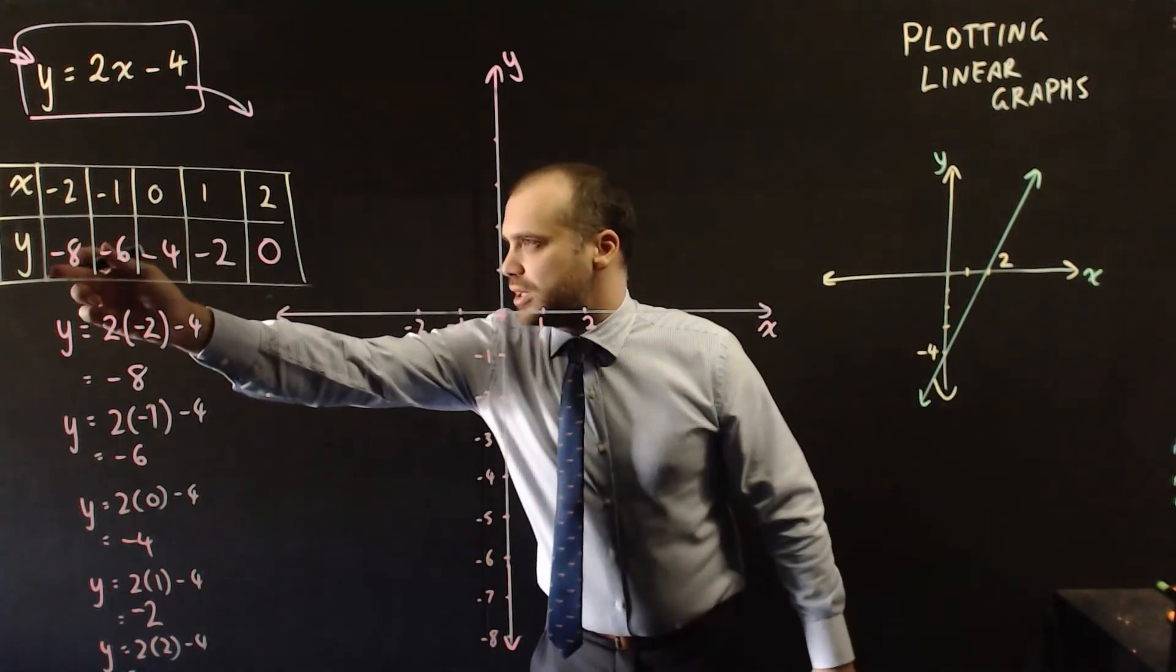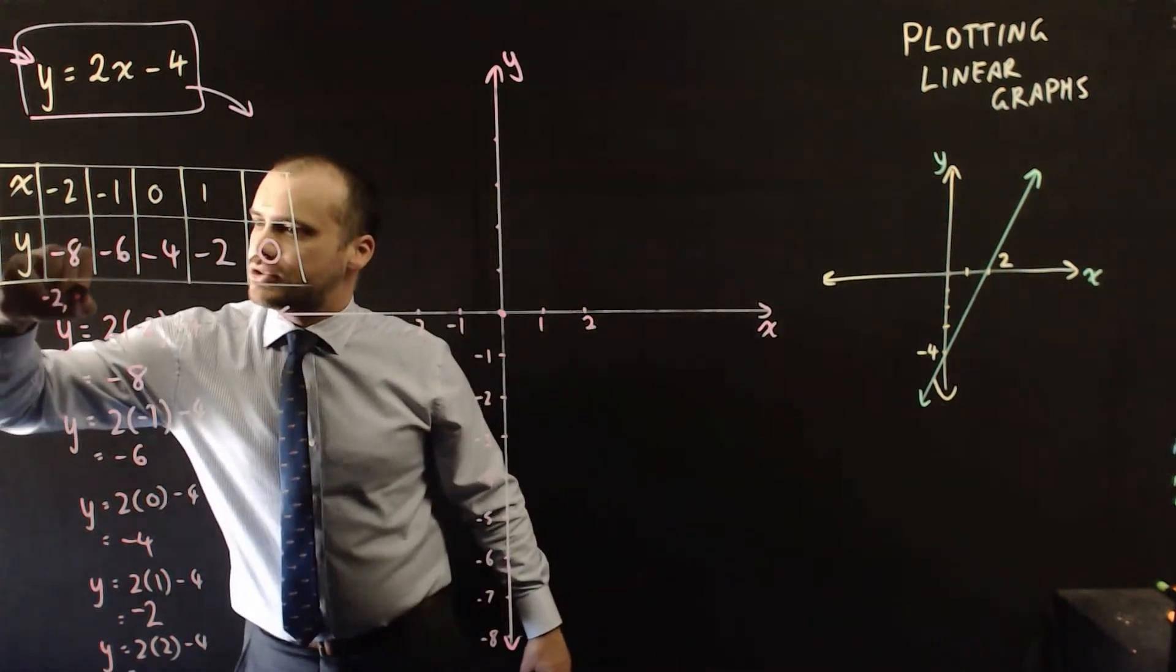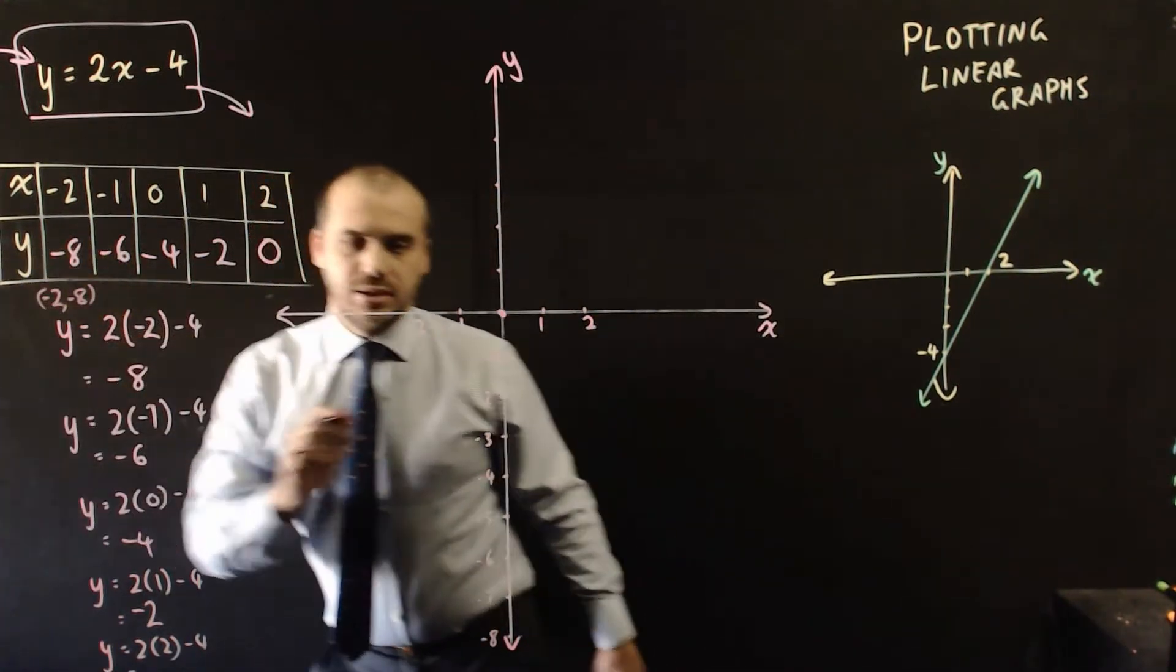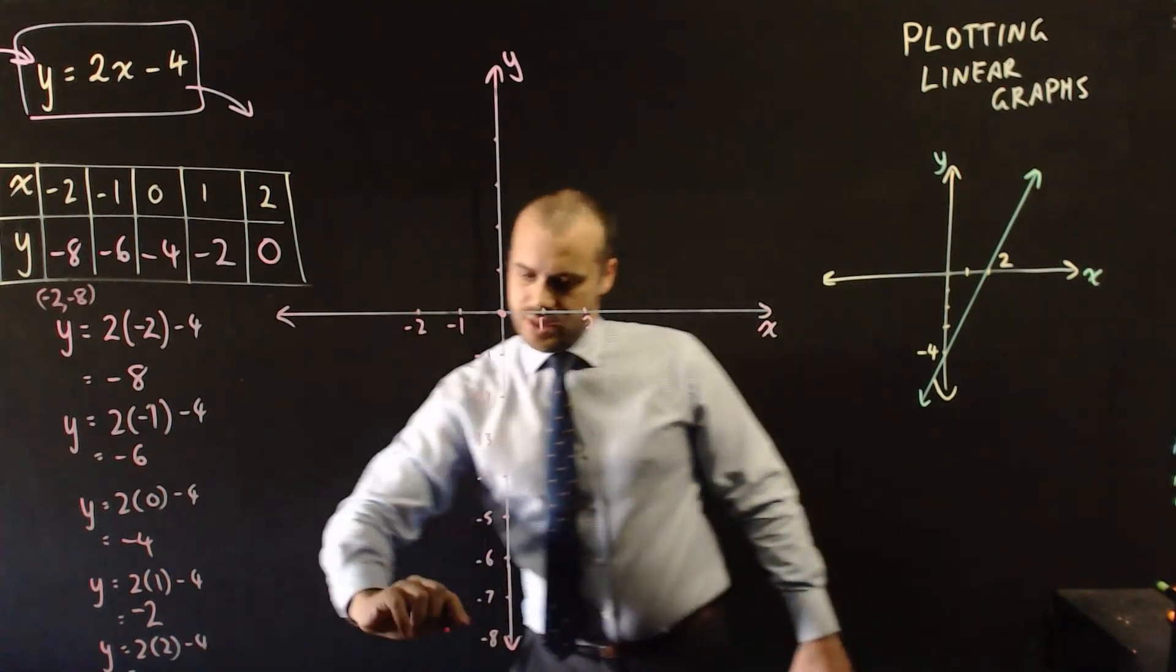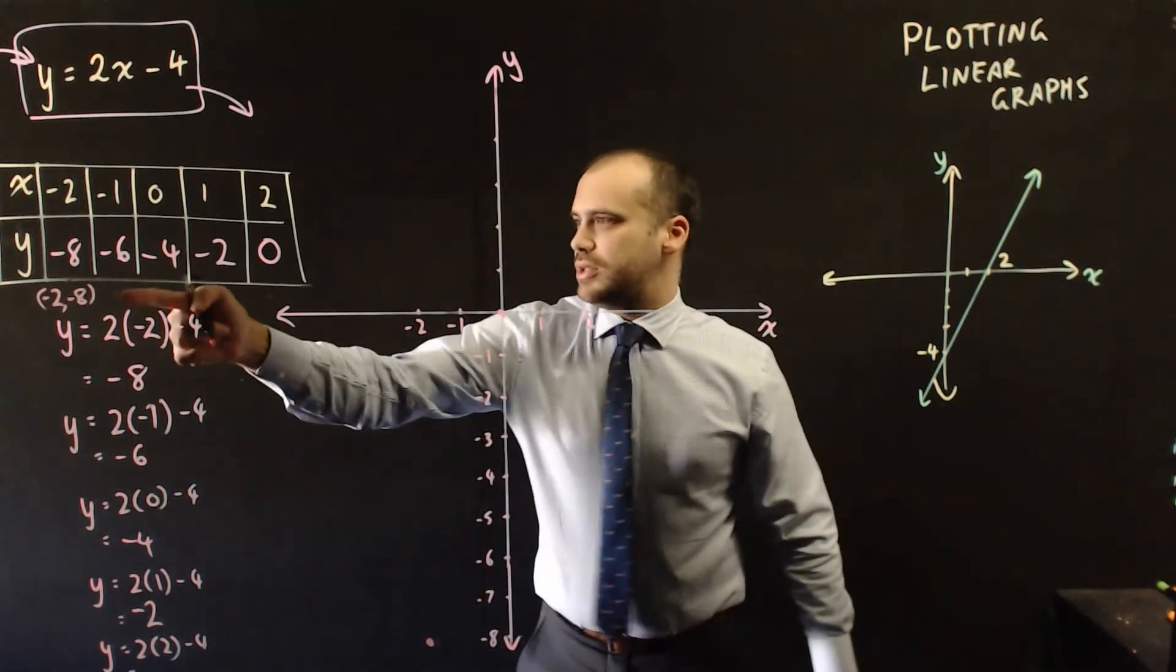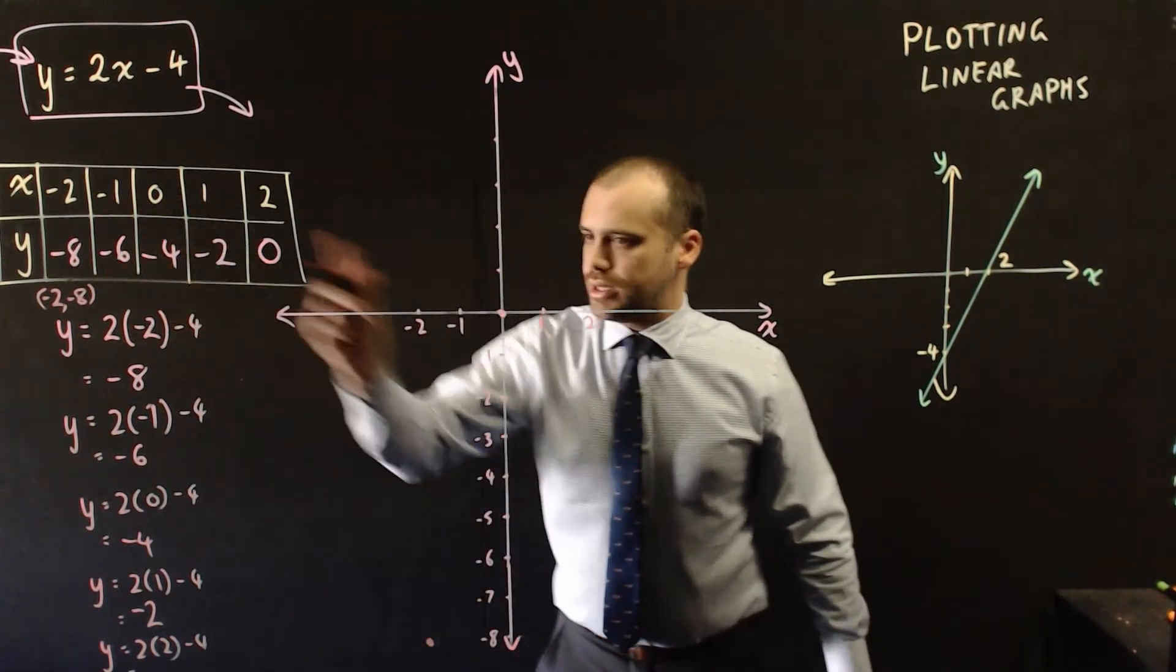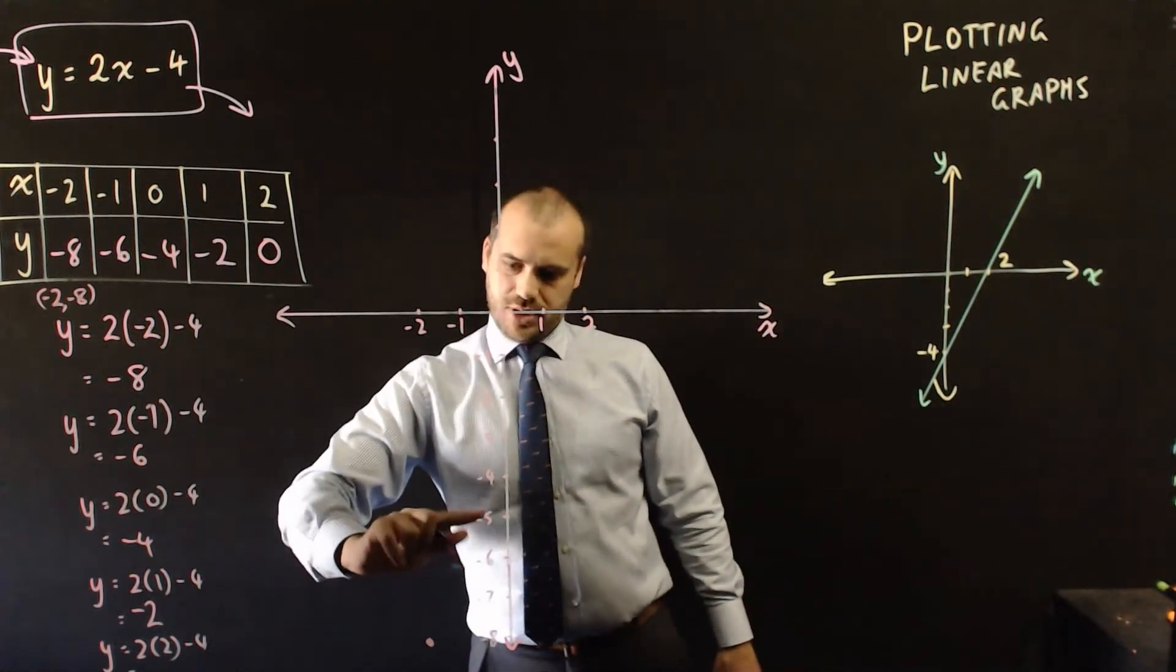Negative 2, negative 8. So that is the point. Across first, negative 2, and then down to negative 8. That point right there. The next point here, negative 1, negative 6. That point right there.